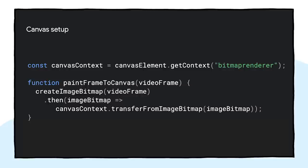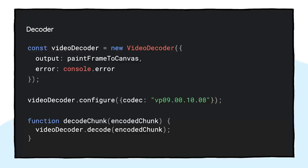Let's look at some simple examples for how you can use the decoder part of WebCodecs. In the canvas setup part, we grab a canvas's context and make a simple function to paint a video frame to that canvas by converting it to an image bitmap. When you want to set up the decoder, you call the new VideoDecoder element, set up the output function defined previously, and log out any errors. Then you configure it with the codec you want to use, and you have this incredibly simple function where you just pass in your encoded chunk and call the decode function from your VideoDecoder, and it does the rest of the work for you.